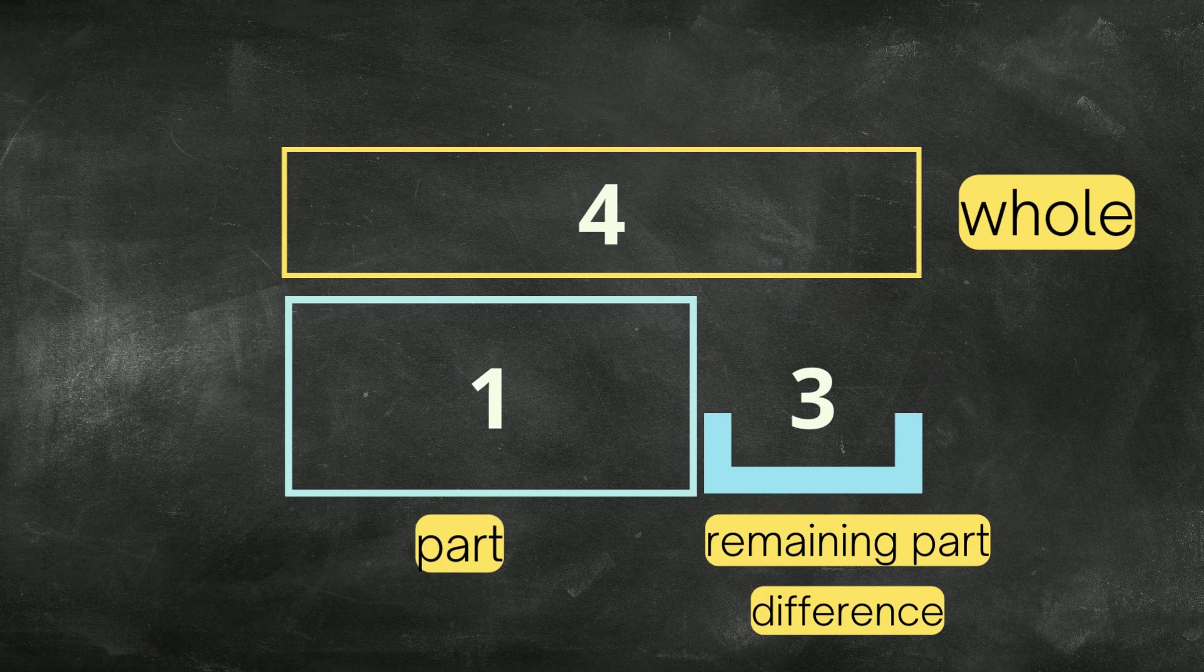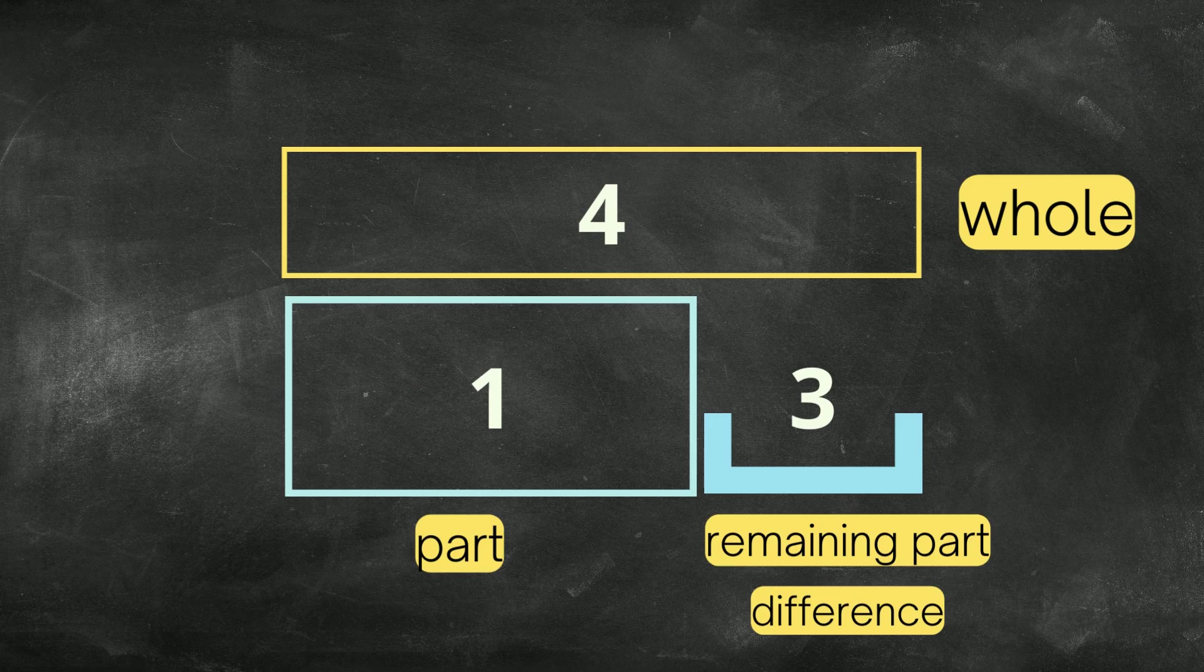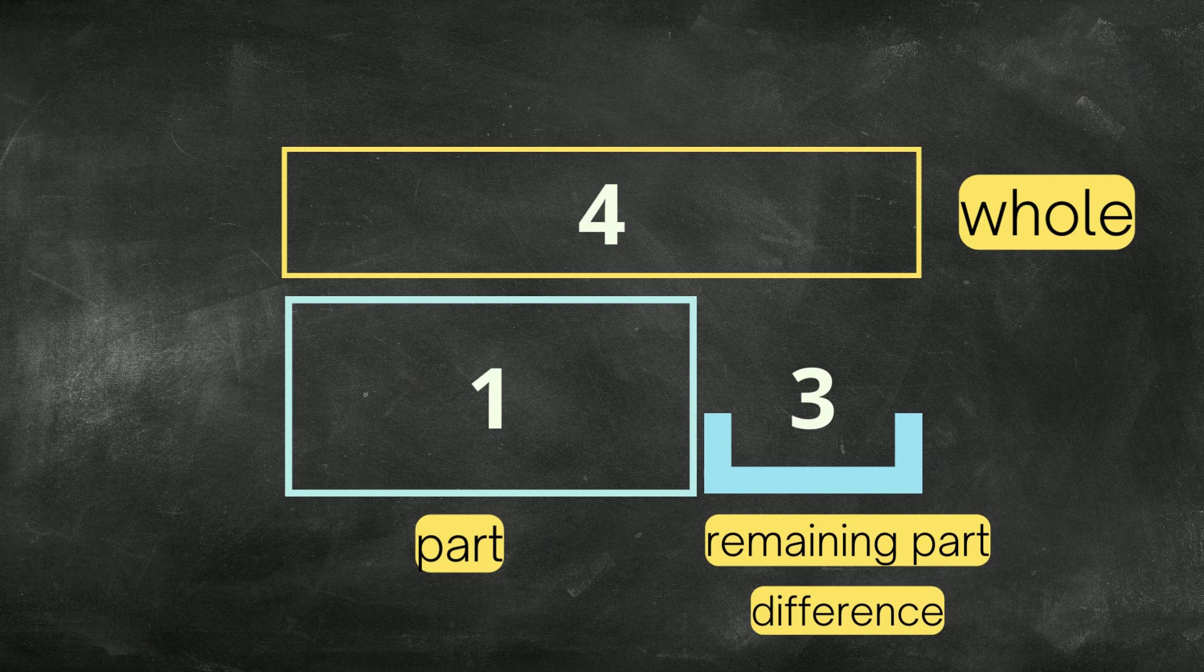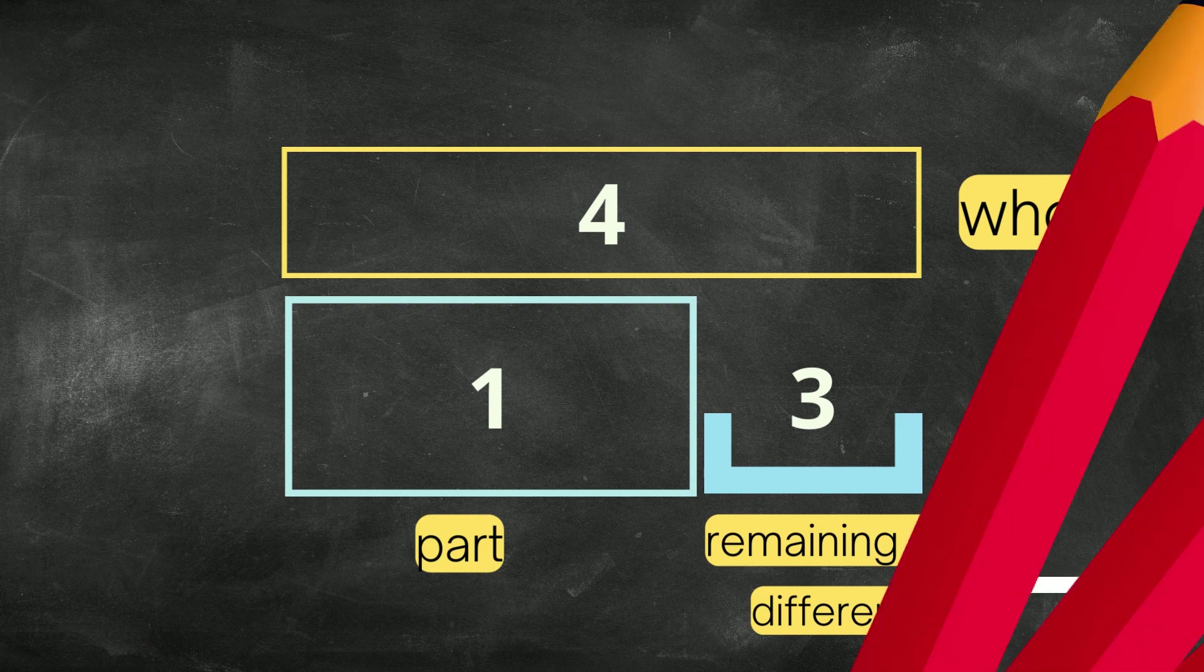Now, with the help of our bar model, we can go ahead and write the subtraction sentence. So I'm going to start with the number on top, which is the whole. Remember, the whole amount was 4. There were 4 bunnies. So I go ahead and write that 4 over here.